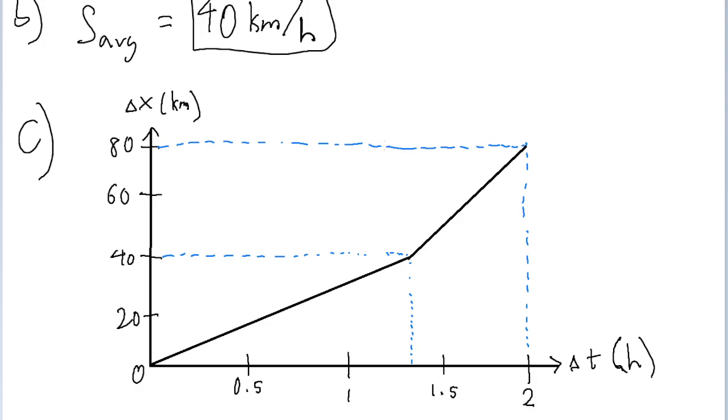The problem specifically asks us to show how we can represent average displacement on this graph. Remember average displacement refers to the total distance divided by the total time without regard for where the intermediate stops are. So we can represent the total change by just drawing a line from the starting point all the way to the ending point.